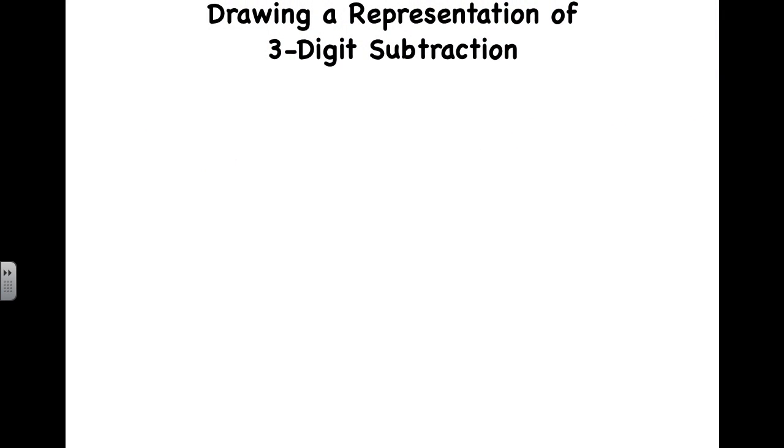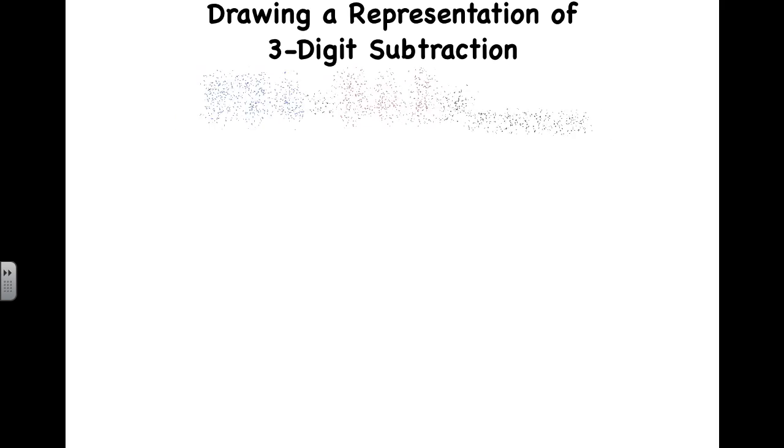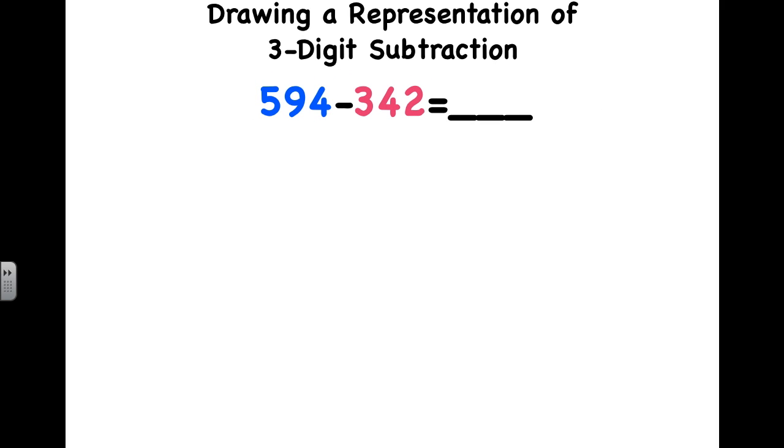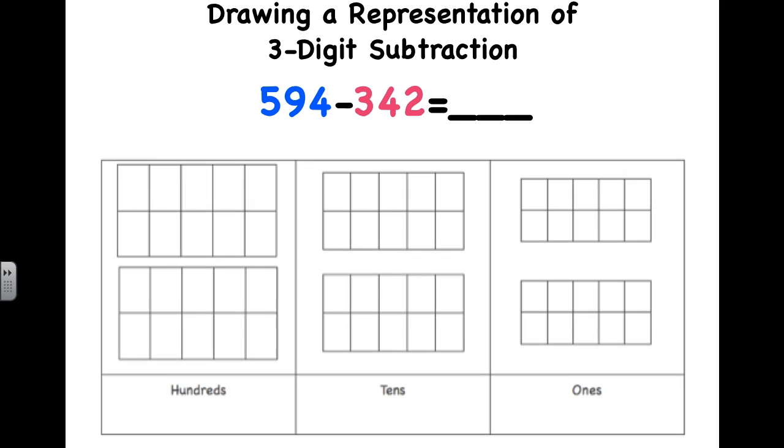Next, let's look at how to draw a representation of the same three-digit subtraction problem. Again, we're looking at 594 take away 342. So, we've already represented the problem using base ten blocks. Now, let's look at how this is drawn using paper and pencil.